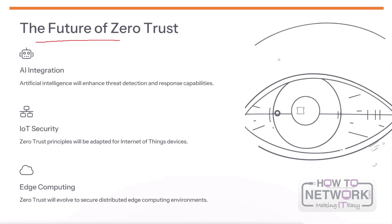The future of zero-trust will be shaped by key technology trends like AI, IoT, and edge computing. AI will enhance threat detection and response, allowing for more proactive and intelligent security. Zero-trust principles will be adapted to secure the growing number of IoT devices, which often lack traditional security controls. As computing becomes more distributed at the edge, zero-trust will evolve to secure this dispersed environment. These advancements will help organizations stay ahead of the rapidly changing security landscape and protect against emerging threats.